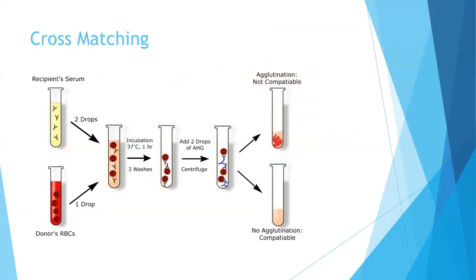Let's talk about cross-matching. We take the recipient's serum and the donor's blood, mix and incubate them for one hour at 37 degrees Celsius, then wash three times. We then add two drops of anti-human globulin and centrifuge. If there is agglutination, the blood is not compatible. If there is no agglutination, the blood is compatible and we can transfuse the patient.